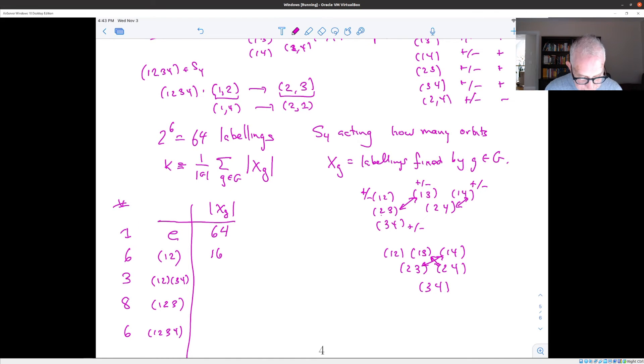So, and we can just check. It sends 14 to 23, for example, and it sends 23 to 14. So it has the same pattern as the other, as the single transposition. Namely, we can put anything we want on 1 and 2. We have two choices for these pairs, and then anything we want for 3 and 4. So again, we have 16 possibilities, 2 to the 4th.